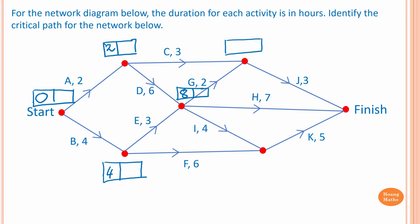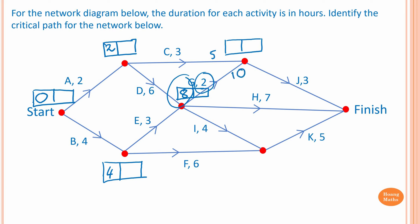To find the earliest starting time for activity J, we complete the relevant activities: three plus two is five, and eight plus two is ten. The largest value is ten, so the earliest starting time for J is ten hours.